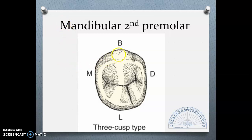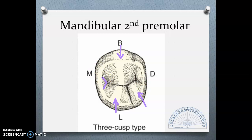Here, in this type of 2nd premolar, we have the 3-cusp type — same with your typodont. You have the buccal cusp, the mesiolingual cusp, and the smaller distolingual cusp. Of course, you still have the mesial triangular fossa, the distal triangular fossa where you will place your dovetail, your central groove, and your lingual groove.